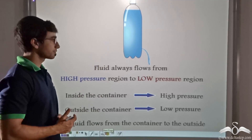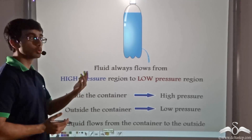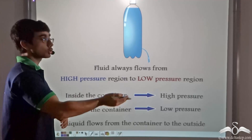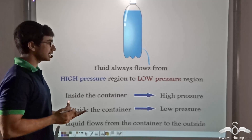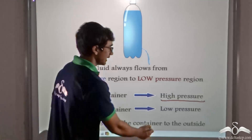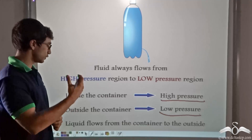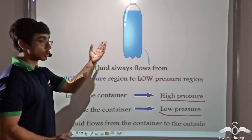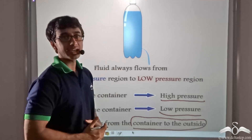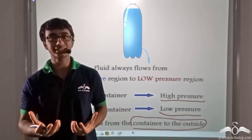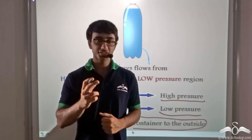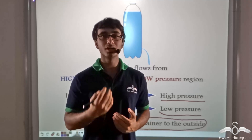In the case of the water bottle that was leaking, fluid always flowed from the high pressure region to the low pressure region — that is, from inside the water bottle to outside it. Since the fluid or water is flowing outside, inside the container the pressure is high and outside the container the pressure is low. Since fluids flow from high pressure to low pressure, the liquid flowed from inside the container to the outside. So to recap, fluids — liquids or gases — always flow between two points if there is a pressure difference, flowing from high pressure to low pressure.